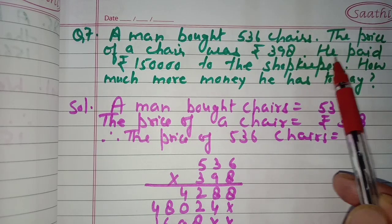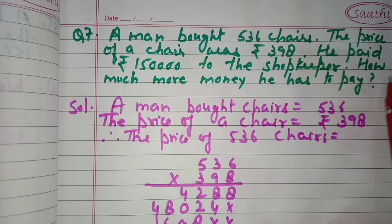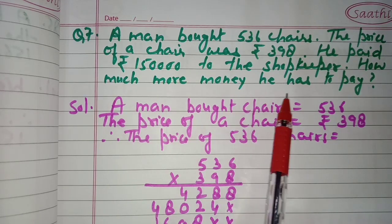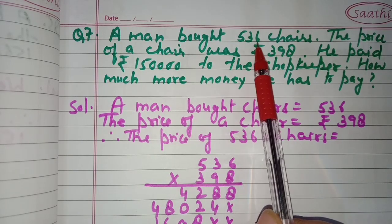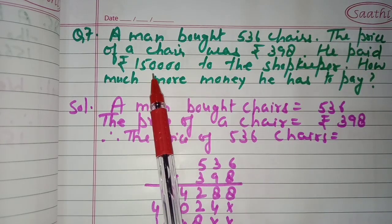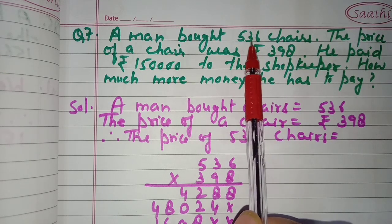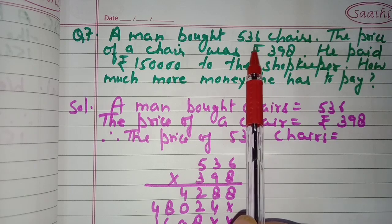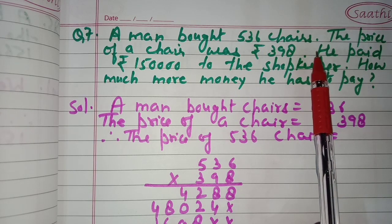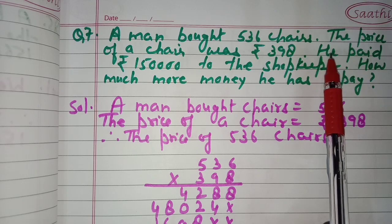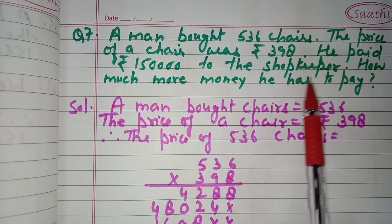Question number seven: a man bought 536 chairs. The price of a chair was rupees 398. He paid rupees 1,50,000 to the shopkeeper. How much more money does he have to pay? He bought 536 chairs at rupees 398 each, so we multiply to find the total price of 536 chairs.